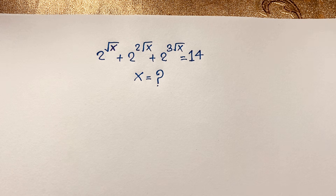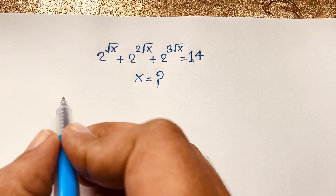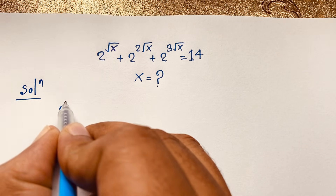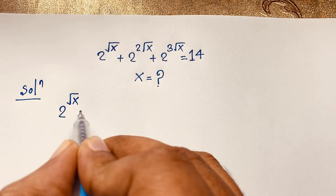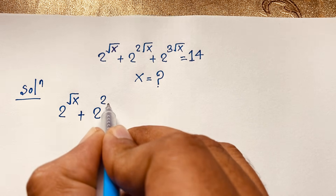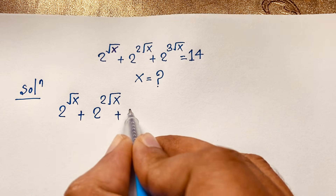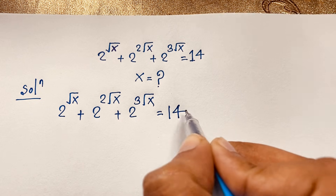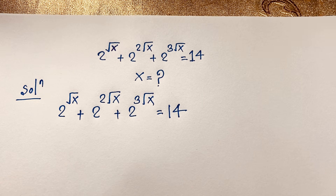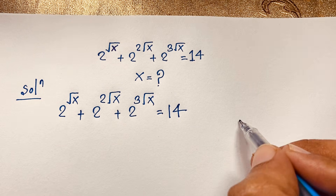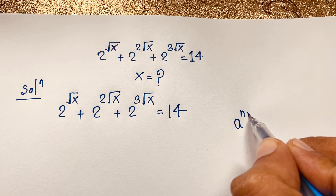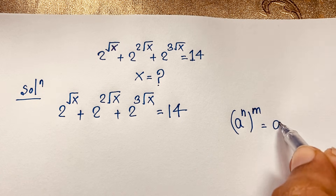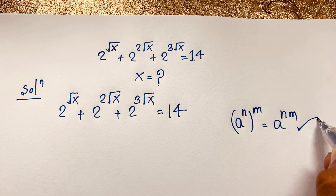I will solve this question using two methods. Our question is: 2 to the power square root x, plus 2 to the power 2 square root x, plus 2 to the power 3 square root x, is equal to 14. This is a nice math problem. According to the exponential formula, we know that (a to the power m) to the power n equals a to the power n·m. If I apply this formula here...